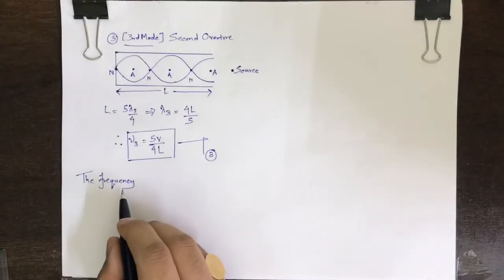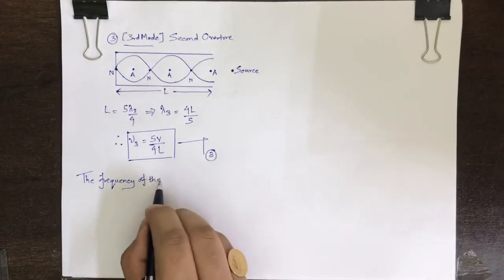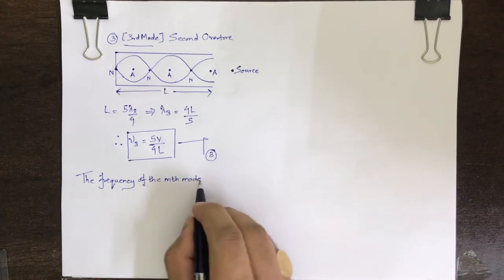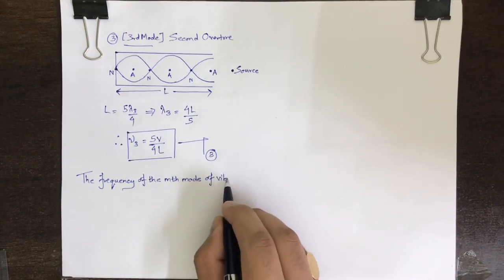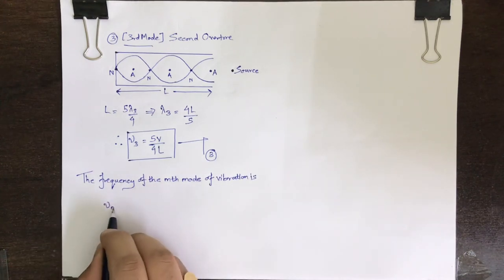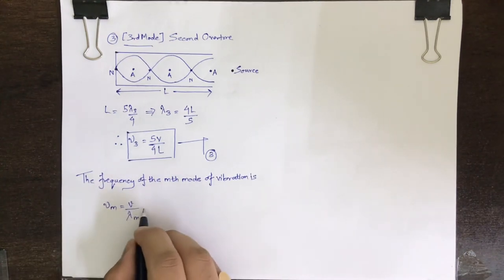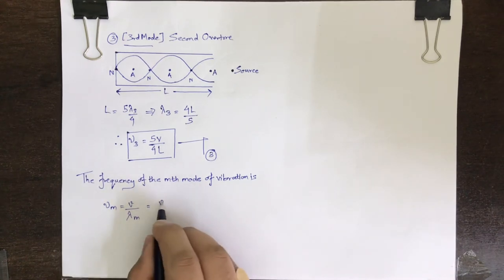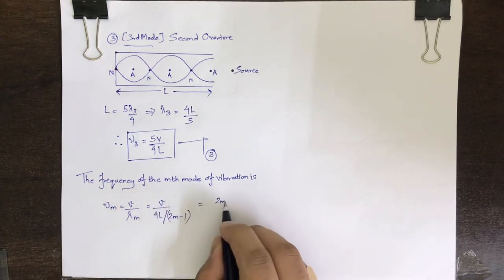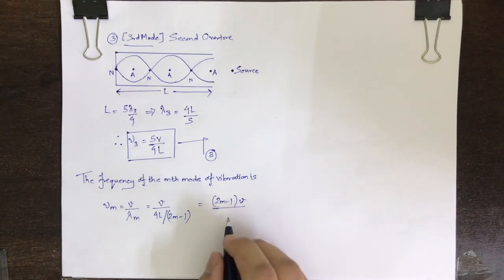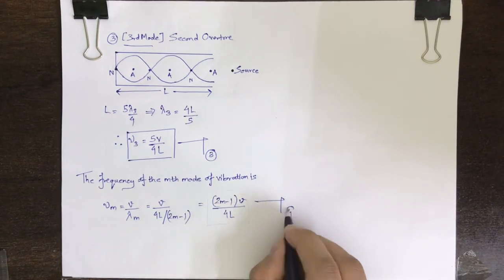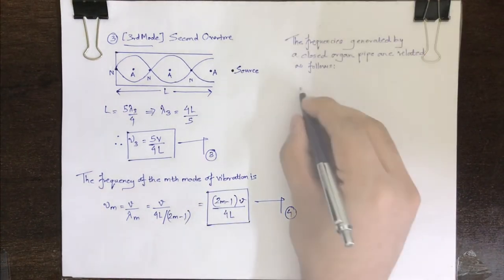With the help of the previous three equations, it follows that the frequency of the m-th mode of vibration is mu M, which is equal to V upon lambda M. Therefore, mu M is equal to 2M minus 1, times V upon 4L.